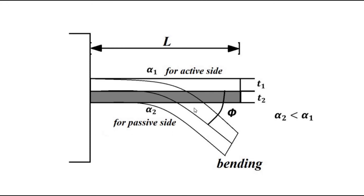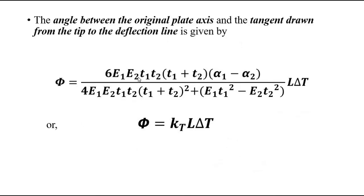The next important thing is to establish a relationship between angle phi and the temperature change. This is expressed by a mathematical equation. The angle phi is given by: 6 × E1 × E2 × T1 × T2 × (alpha 1 minus alpha 2), divided by a denominator involving E1 T1 squared and E2 T2 squared terms, multiplied by L and delta T.